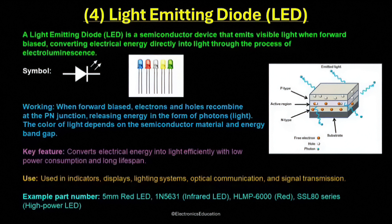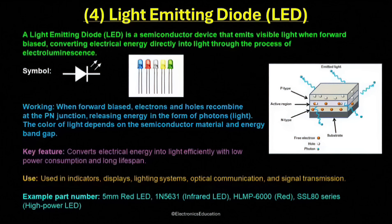The color of the emitted light depends on the semiconductor material and its energy bandgap, meaning different materials produce different colors such as red, green, blue, or white. The symbol of an LED is similar to a normal diode symbol but with two small arrows pointing outward, showing the emission of light. The anode is connected to the longer terminal while the shorter terminal represents the cathode. The forward voltage required for an LED typically ranges from about 1.8 volts for red LEDs to around 3.3 volts for blue and white LEDs, depending on the color and material.